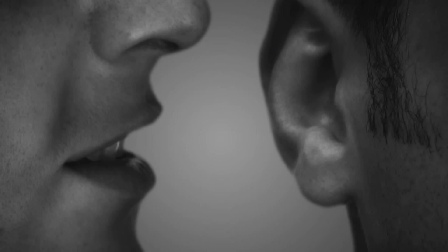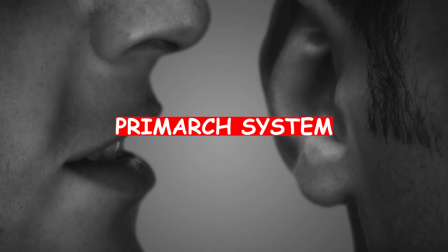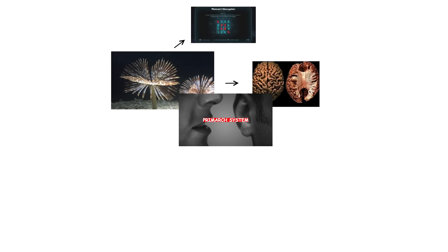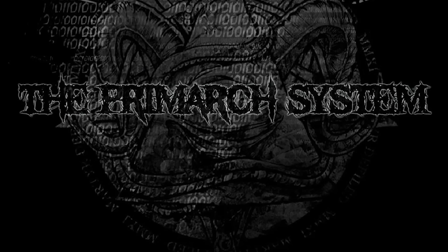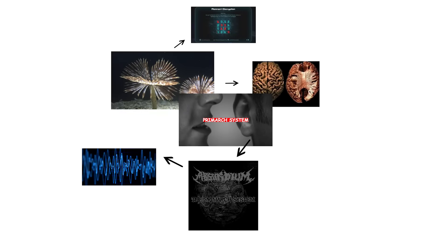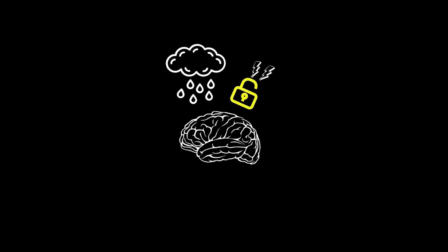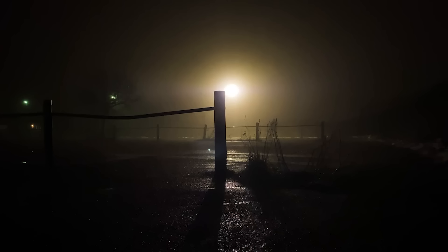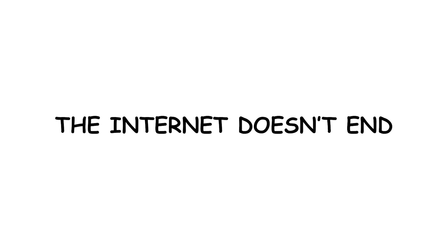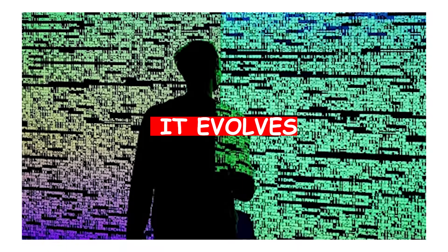Some say beneath even this lies one last layer — the Primark system, the theoretical heart of everything, the place where all signals, all code, all control converge into a single self-aware core. But that's another story. Because once you've seen the fog, you understand the truth: the internet doesn't end. It evolves.